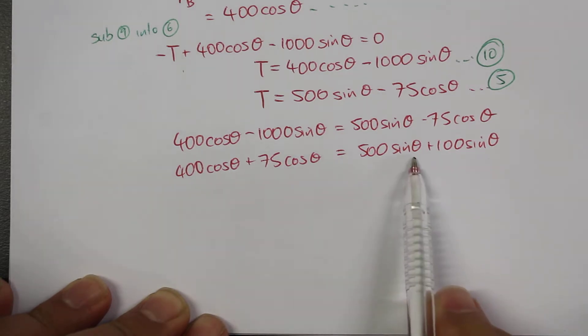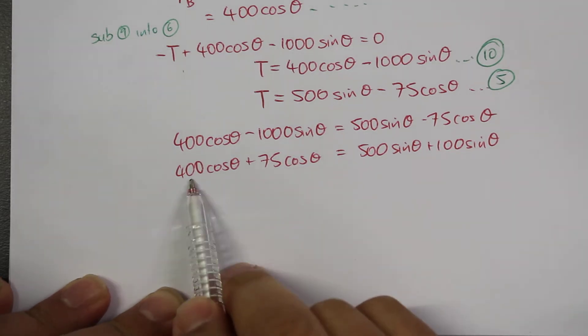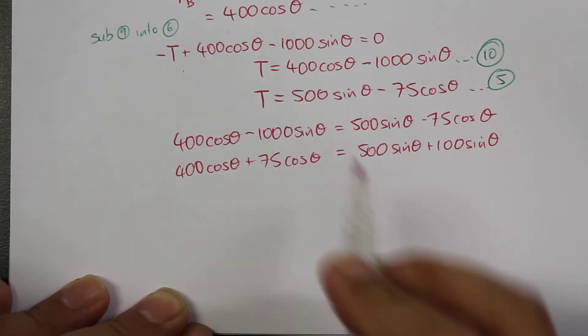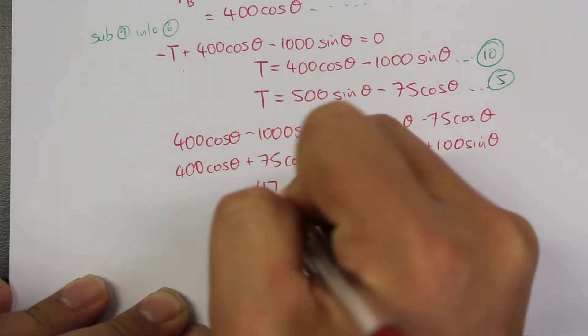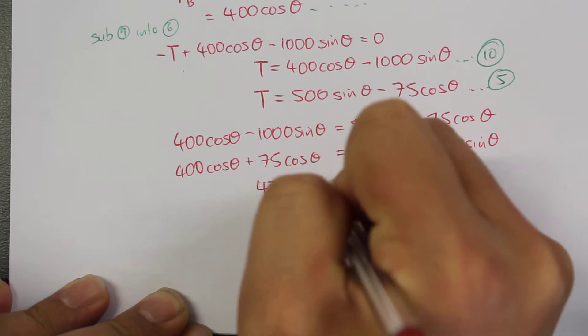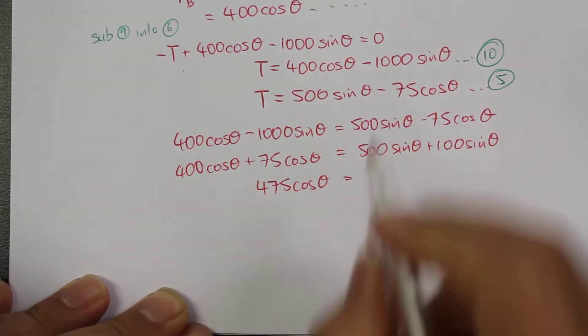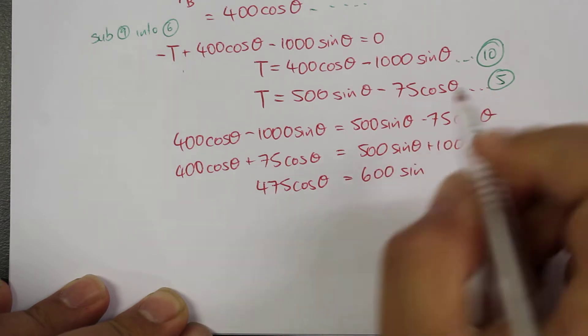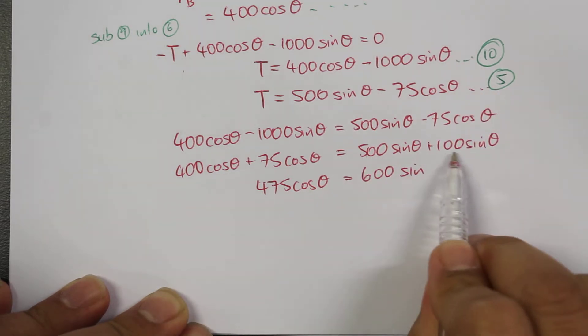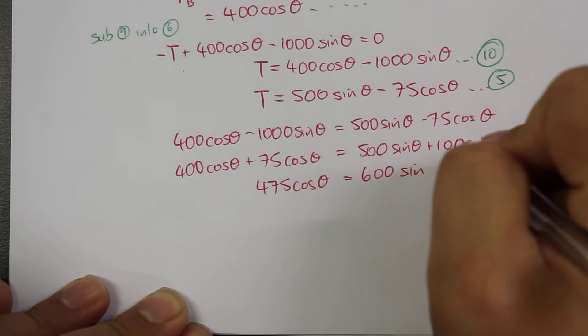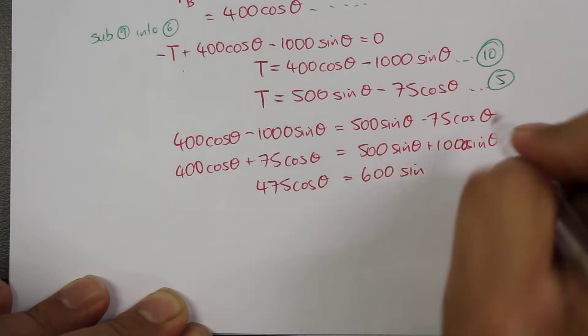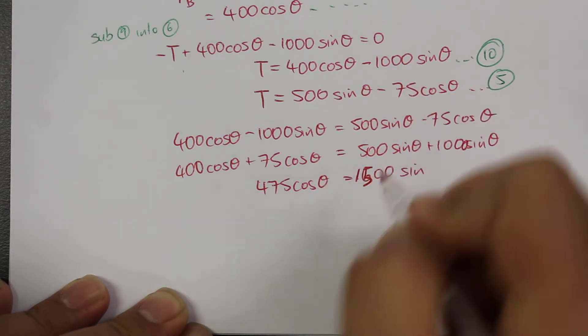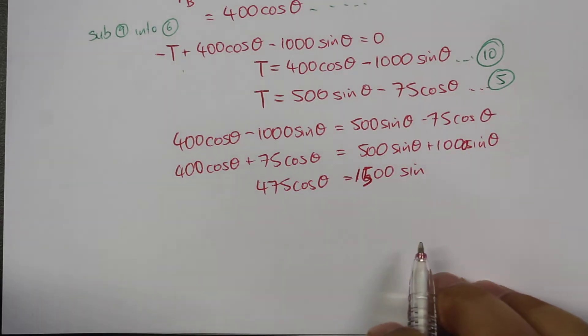We'll factorize cosine theta and sine theta, or you can treat it this way. So 400 plus 75 cosine theta is 475 cosine theta. And then this is equal to—sorry—500 plus 1000 is what should be written here. So this will be 1500 sine theta.